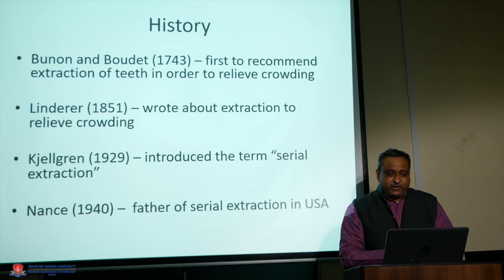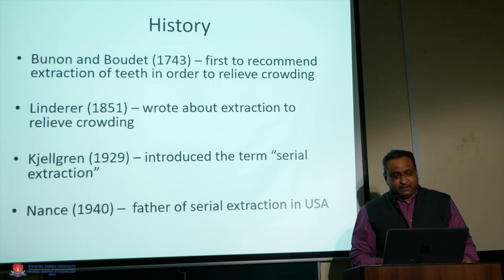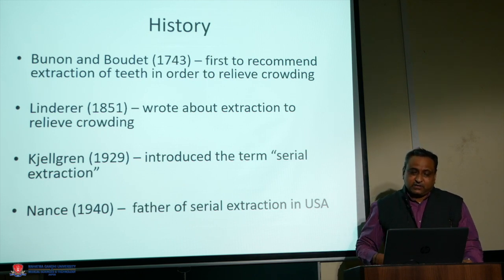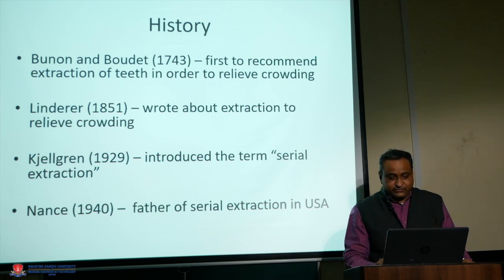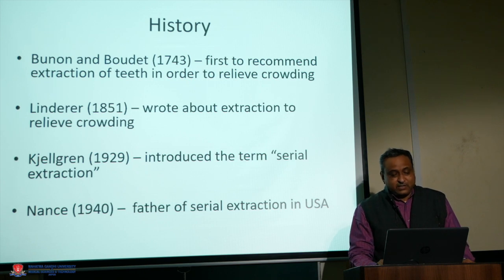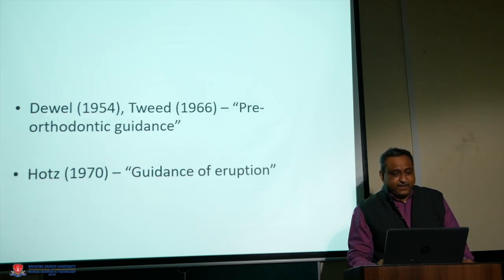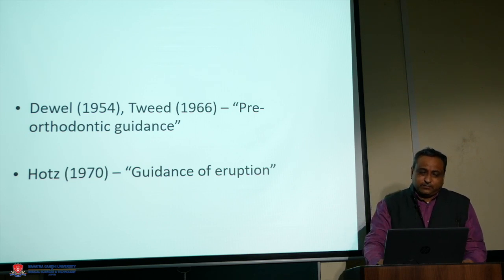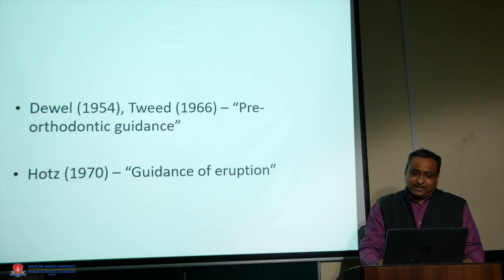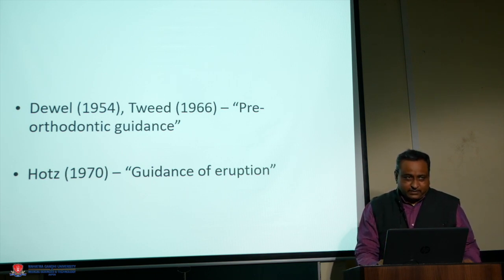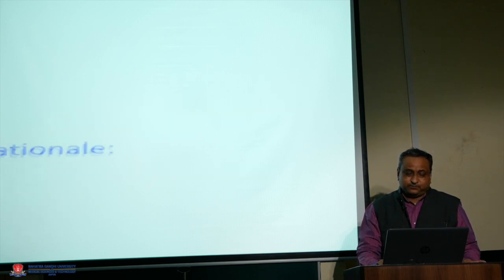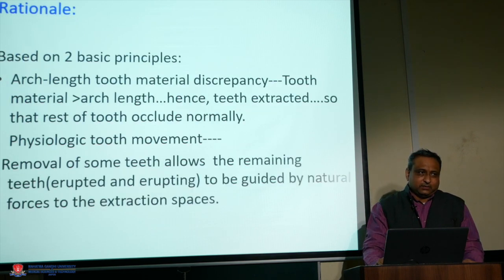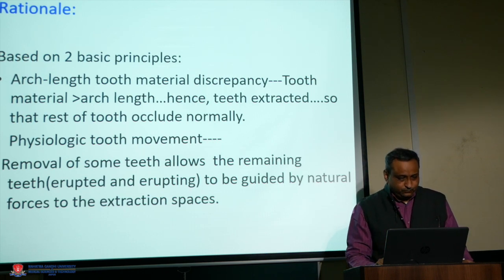Bunon and Baudet in 1973 were the first to recommend extraction of teeth to relieve crowding. Linderer also wrote about extraction to relieve crowding. Jaligran actually introduced the term 'serial extraction' in 1929. Nance is considered the father of serial extraction in the USA. Tweed termed this procedure 'pre-orthodontic guidance,' and Hodes in 1970 termed it 'guidance of eruption.'